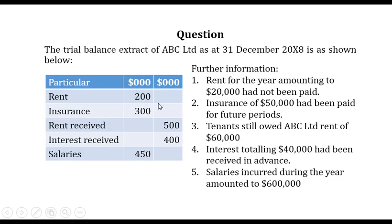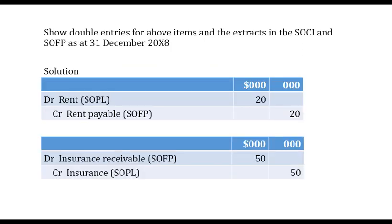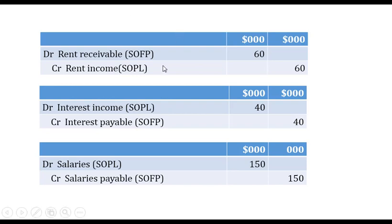For rent received, note three says tenants still owed ABC Limited rent of sixty thousand dollars. We rented to tenants and they have yet to pay us sixty thousand dollars. For us it's income not yet received, so it is accrued income — an asset, treated the same way as a prepaid expense in the statement of financial position. Double entry: debit rent receivable sixty thousand as an asset, and credit rent income sixty thousand because we have not yet been paid that amount so we need to add it.